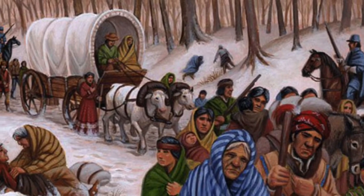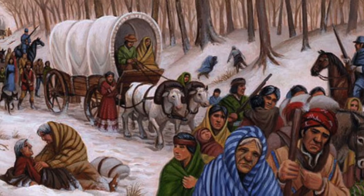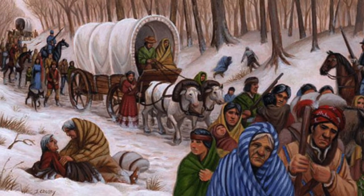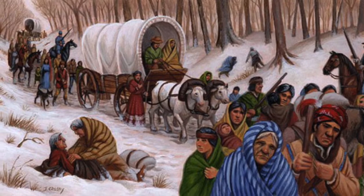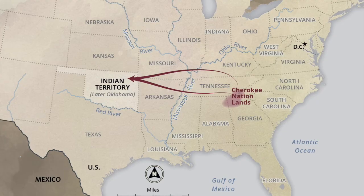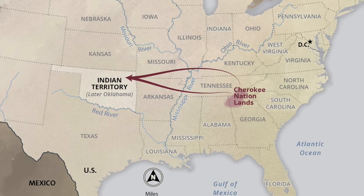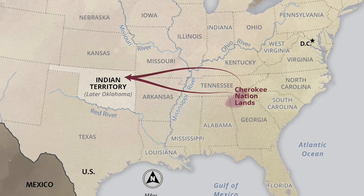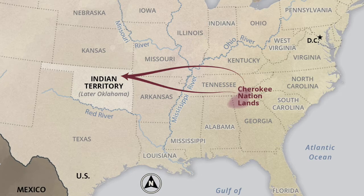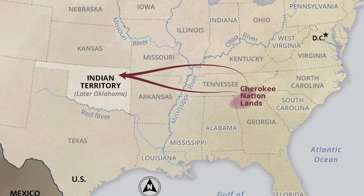This policy actually defied the Supreme Court, which ruled that the Cherokee were a dependent nation of the United States and could not be kicked off their land. However, with Cherokee territory occupying large parts of Georgia, Tennessee, and North Carolina, President Jackson ignored the Supreme Court and removed these Native people at gunpoint.